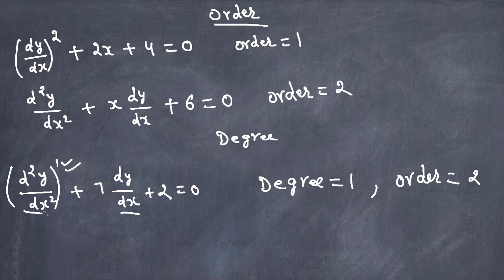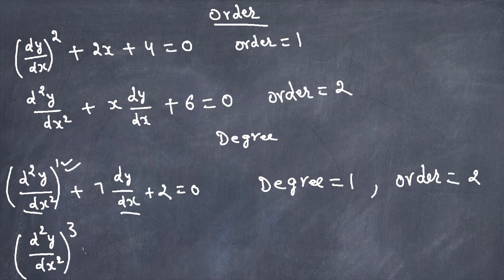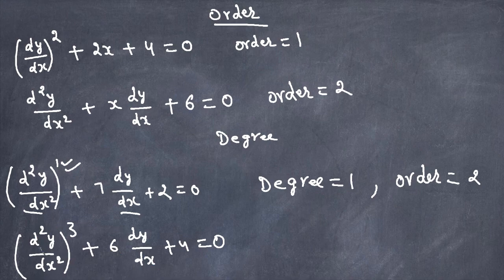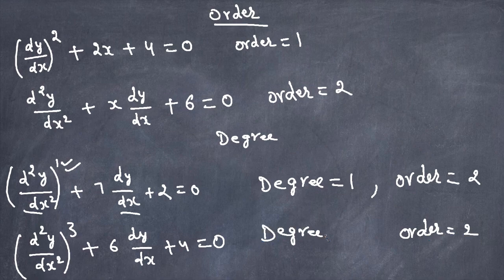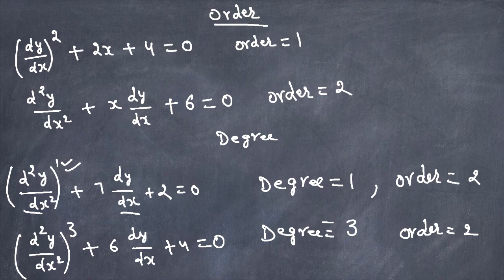Let's look at another example to see the difference. Take (d²y/dx²)³ plus 6·dy/dx plus 4 equals 0. What is the order? It's a second derivative — d²y/dx² — so the order is 2. What about the degree? The degree is the power of the highest derivative. The highest derivative is the second derivative, and its power is 3, so the degree is 3.